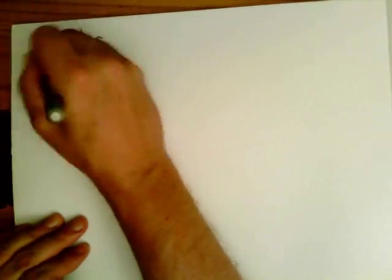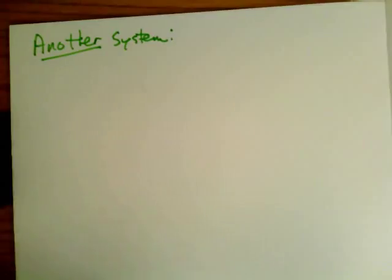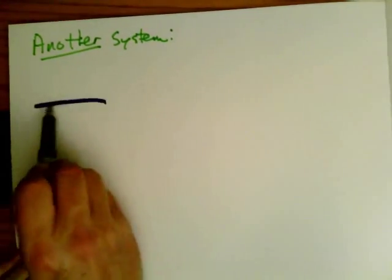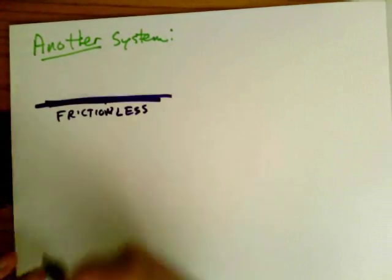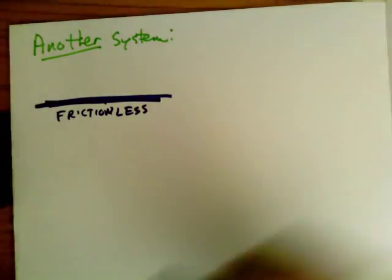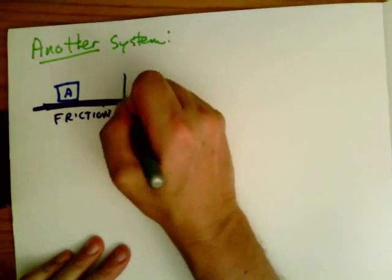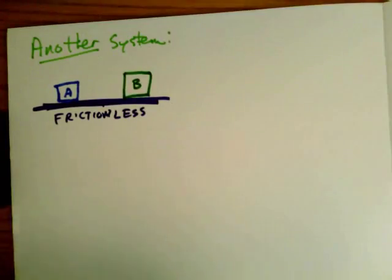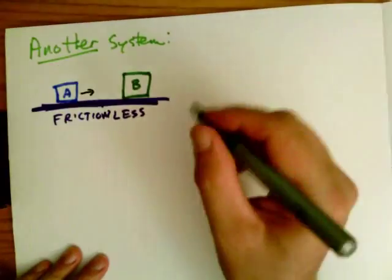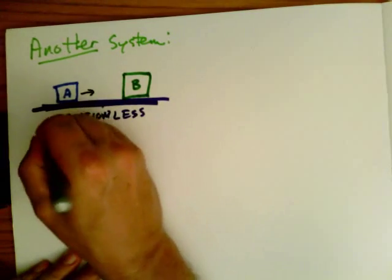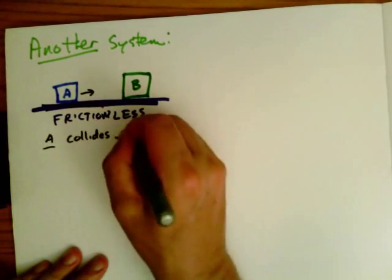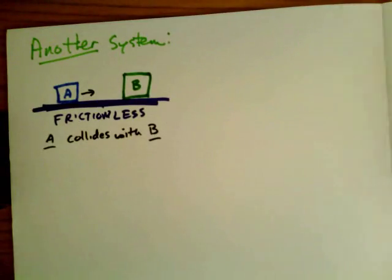Okay so now another example of a system. Again we have a frictionless surface and two blocks A and B. But now the two blocks are in two different places. A is over here and B is over here. Maybe A is moving to the right so that you have some kind of collision between A and B. A collides with B.